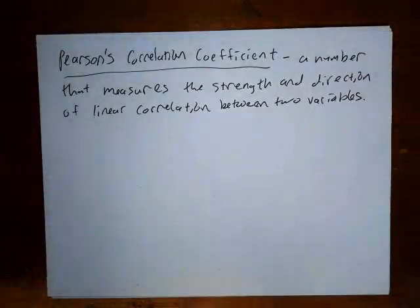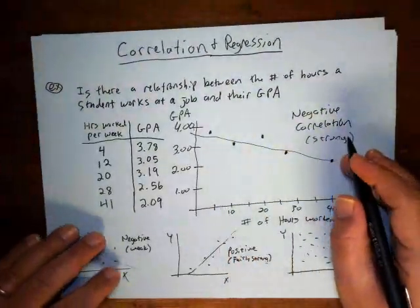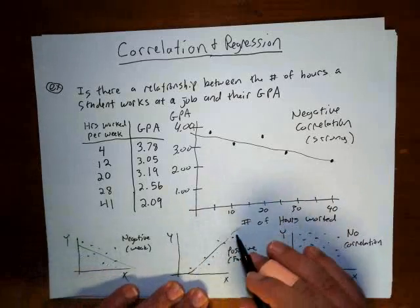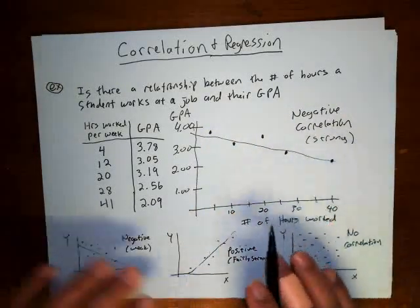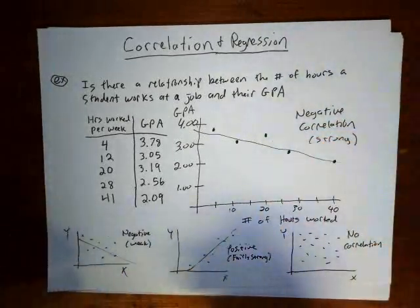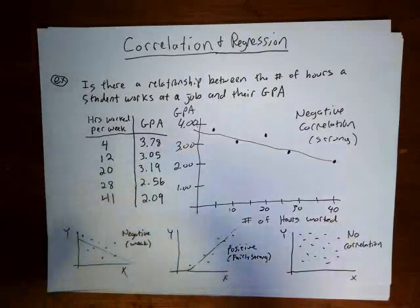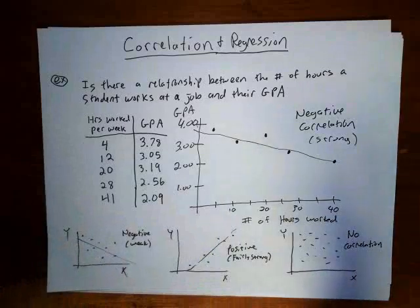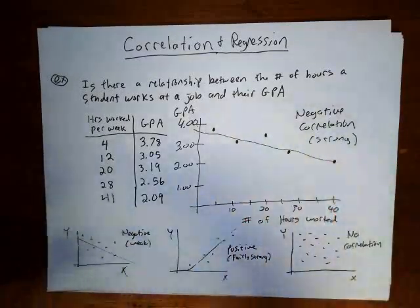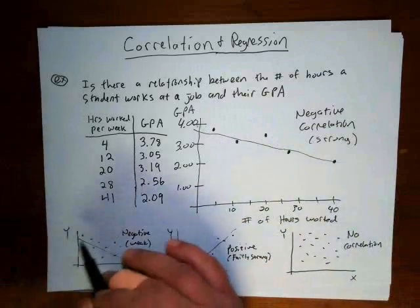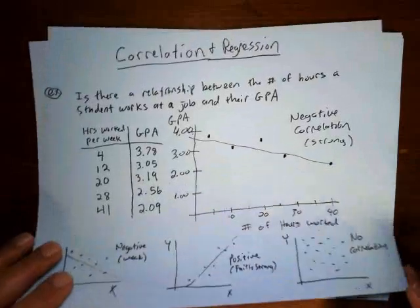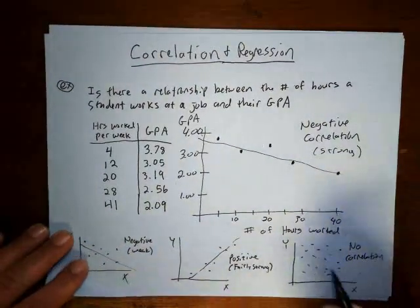Pearson's correlation coefficient measures the strength and direction of linear correlation between the variables. Direction means whether it's going up or down — a positive number means positive correlation, a negative number means negative correlation. Strength refers to how closely the points lie along a line. The correlation coefficient R is between negative 1 and 1. The closer the points lie on a line, the closer R will be to negative 1 or 1. If the points are scattered, R will be closer to 0, and if there is truly no correlation, R equals 0.